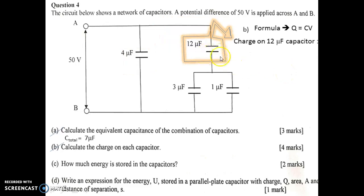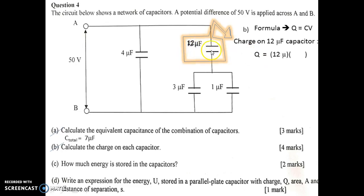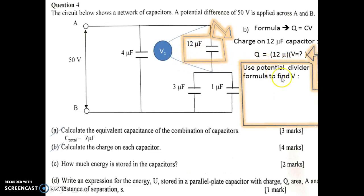Next, the charge on the 12 µF capacitor. Using the formula Q equals CV, the capacitance is 12 µF. But we don't know the voltage, so we need to find the voltage first. We use the potential divider formula to find V.